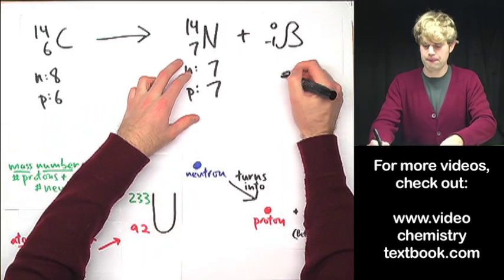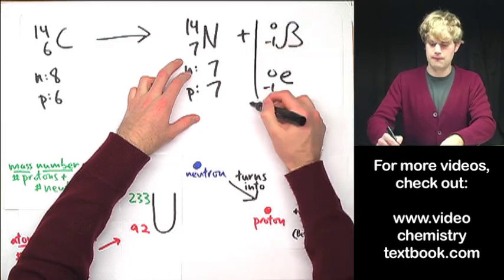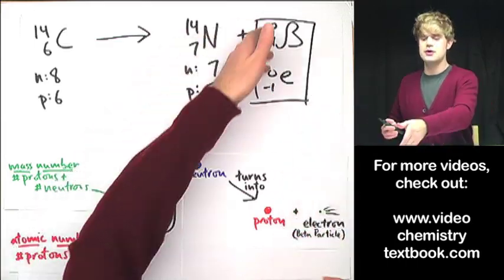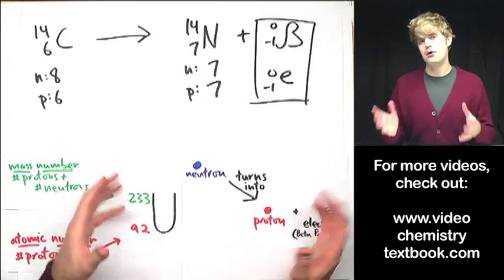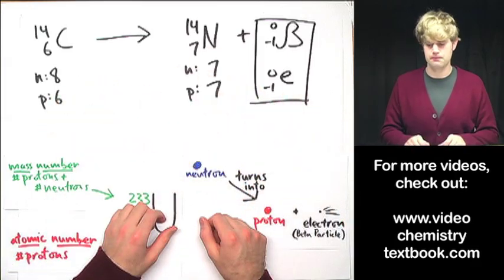But you can also realize that the beta particle is just another word for an electron. So sometimes people like to write just an e, a lowercase e, negative one zero. And so those are the two ways that you can write the beta particle. Both of them are fine. Check with your teacher and see how they want you to do it.